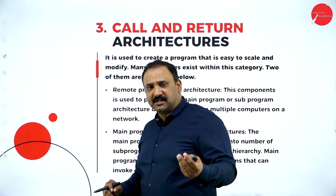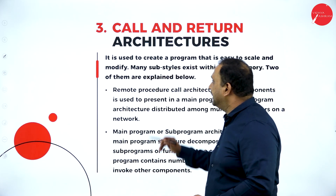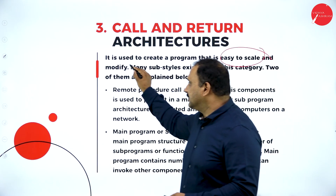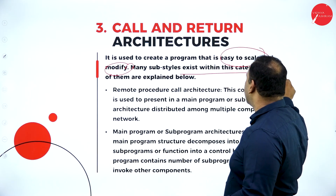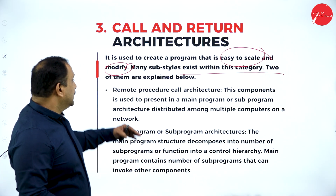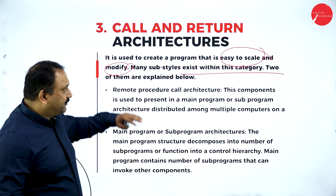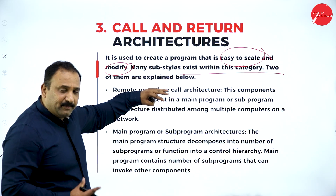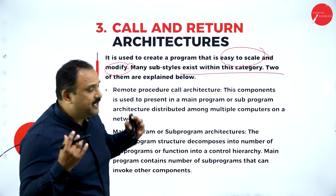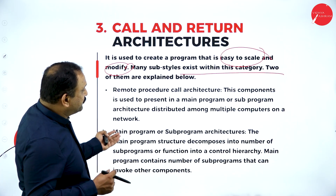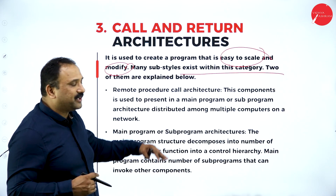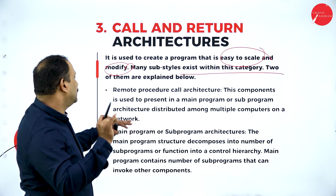Call and return architecture is the third kind of architecture. It is used to create a program that is easy to scale and modify. Many sub-styles exist within this category, two of which are explained here. Remote call procedure architecture uses the present main program or sub-program architecture and is distributed among multiple computers on a network. It is used in a main program or sub-program and you can pull it back at any point of time.